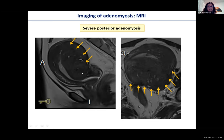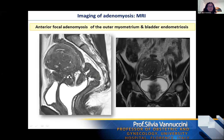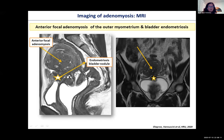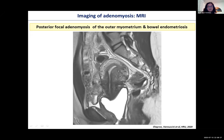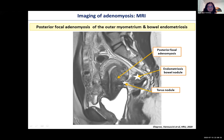We can also find anterior focal adenomyosis of the outer myometrium combined with an endometriosis bladder nodule. Similarly, posterior focal adenomyosis of the outer myometrium can be found alongside bowel endometriosis nodules — a large nodule and a smaller one at the torus. This shows how frequently endometriosis and adenomyosis are associated.